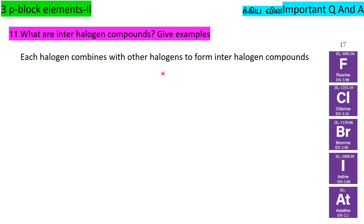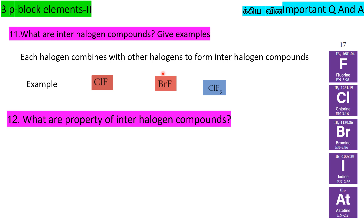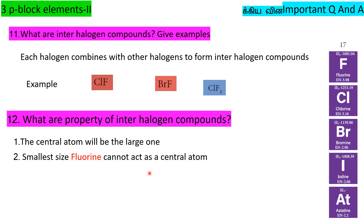Interhalogen compounds are formed when two different halogens react together, for example ClF, BrF. The properties of interhalogen compounds: first, the central atom will be the larger halogen, since a larger central atom can accommodate more fluorine atoms around it. The smallest halogen, fluorine, cannot act as the central atom.